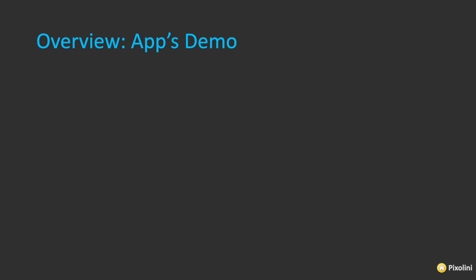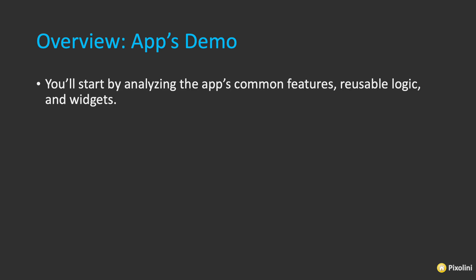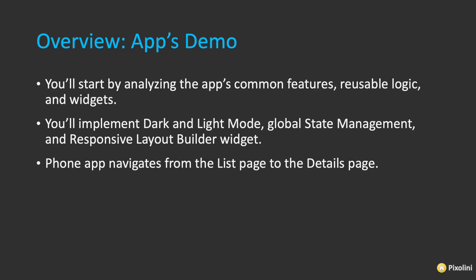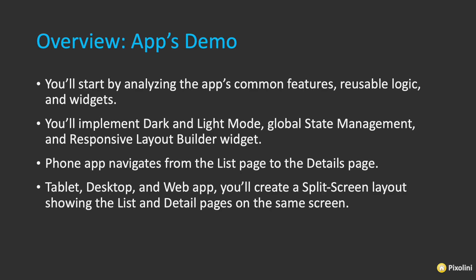Let's get an overview of the application's demo. You're going to start by analyzing the application's common features, the reusable logic, and widgets. You're going to implement dark and light mode, global state management, and a responsive layout builder widget. The phone application navigates from the list page to the detail page. On tablet, desktop, and web applications, you'll create a split-screen layout showing the list and detail pages on the same screen.